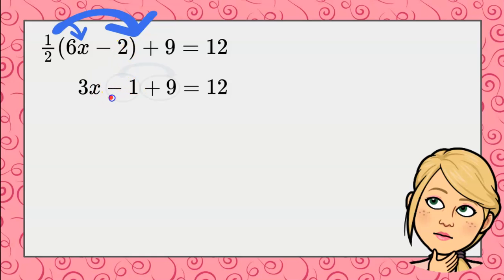Now we have like terms on the left side of the equal sign. These are both constant terms and need to be combined before we go any further. So negative 1 and 9 is positive 8.